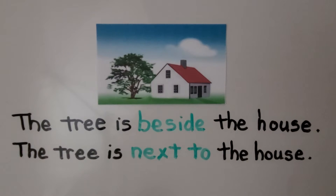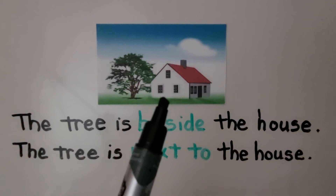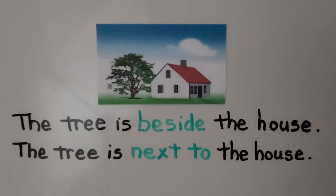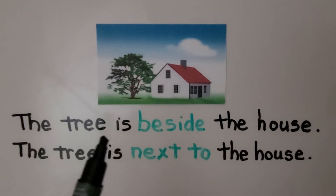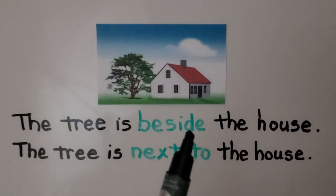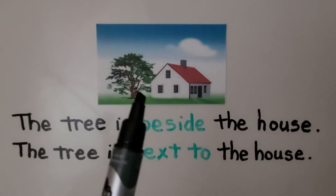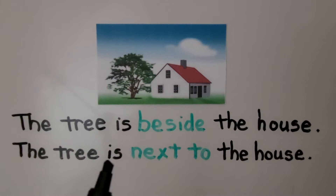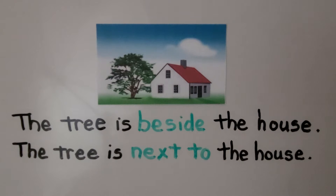Here we have a picture of a tree and a house, and the words 'beside' and 'next to' are a way of saying 'on the side of.' The tree is beside the house. The tree is next to the house — the tree is on the side of the house. Beside and next to mean the same thing.